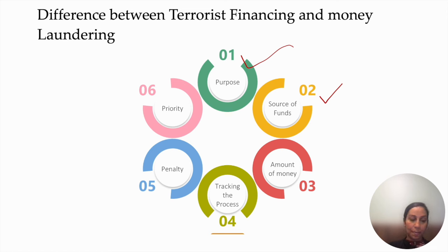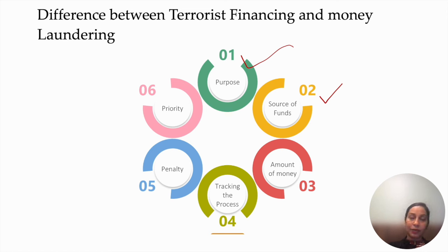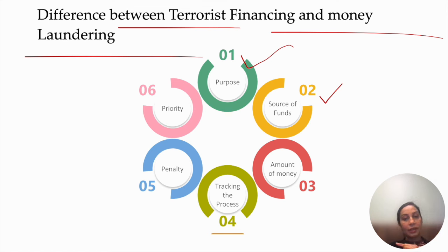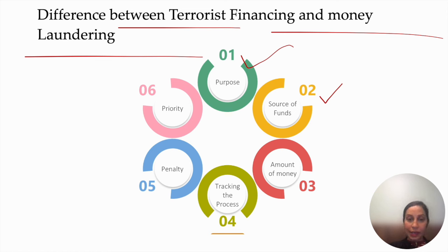The fifth difference is penalties: both are very serious crimes, but penalties for terror funding are much higher than for money laundering. And the sixth is priority: if you have to prioritize which crime should be investigated first, terror funding comes first, then money laundering — not that money laundering is less serious. These differences between ML and TF are what generated the term CFT — Combating the Financing of Terrorism. Next time you hear ML/CFT, you will be clear on what each refers to.